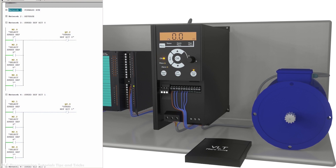Now we upload the program into the PLC and monitor the ladder logic. First we turn on the M0.0 run command bit — it turns on PLC output Q0.0 and sends a digital signal to the run input terminal of the VFD. Next we turn on M2.0 (select speed reference 1), which turns on Q0.2 (speed reference bit 0) and the VFD loads preset frequency reference 2.5 Hz. The motor starts running at 2.5 Hz.